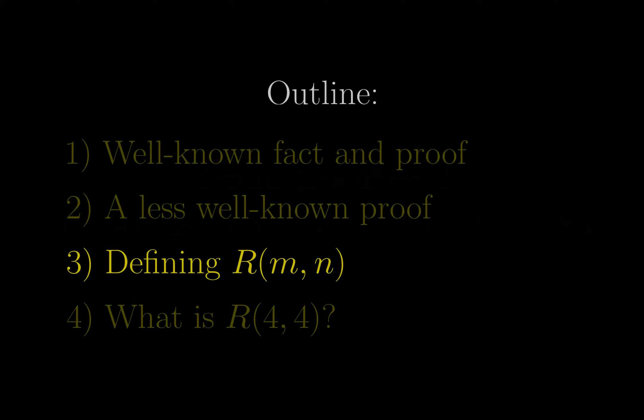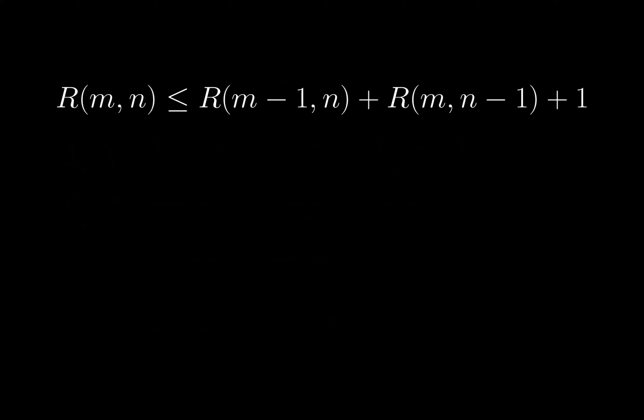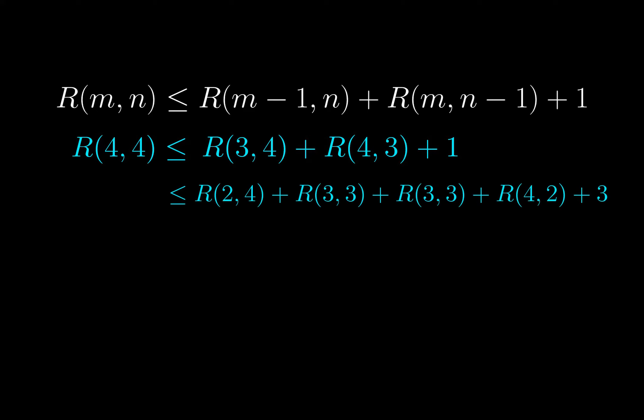So now, after defining the Ramsey numbers, the most exciting bit is R(4,4), and the proof is a very nice and sneaky argument. First of all, let's borrow this inequality for a second to have a grasp on the size of R(4,4). By substituting m and n to be 4, we have an upper bound of this sum. By applying the same inequality one more time, we get this.